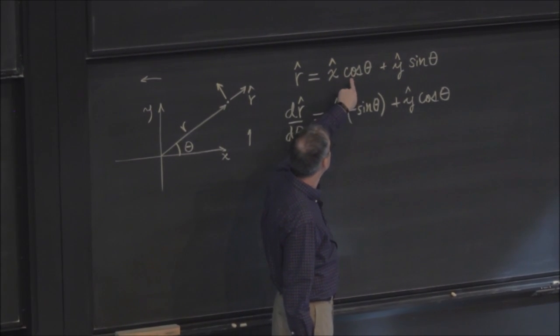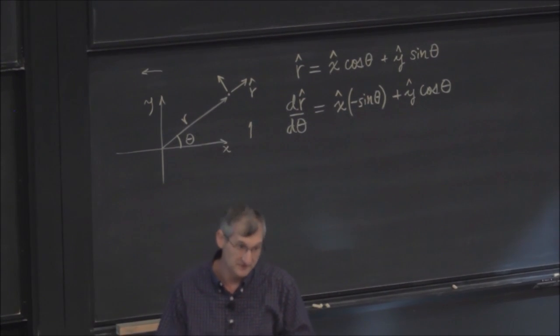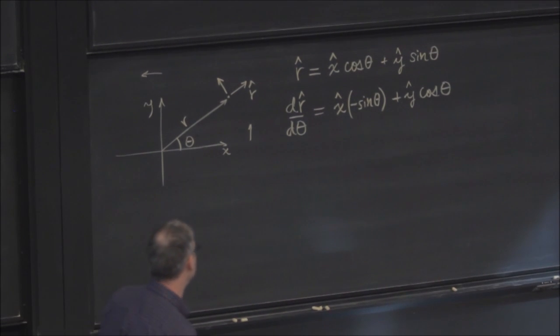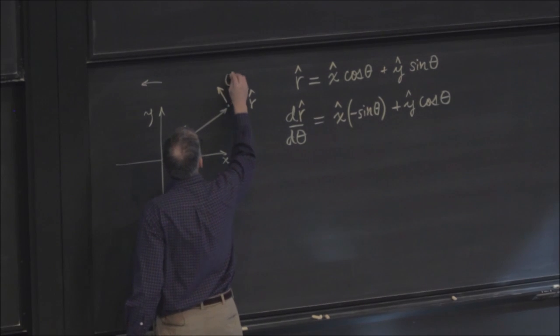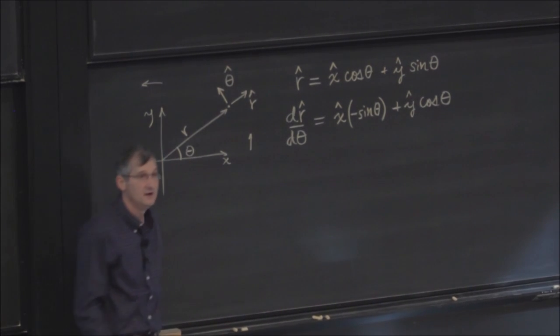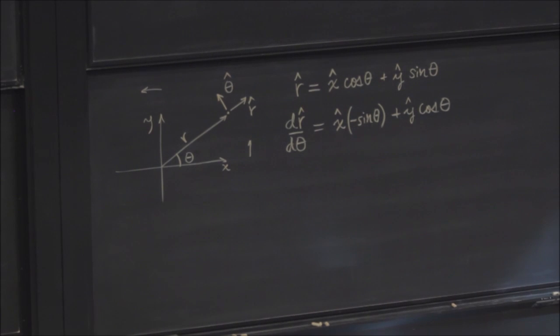So the dot product between this vector and that one is minus sine theta cosine theta, plus sine theta cosine theta, zero. Okay, so they're perpendicular. It's also got unit length, and it points that way. And that is, in fact, the unit vector that you would get if you held r fixed, and you increased the angle theta. Are we in agreement? I think we did this before, right? In a previous life?